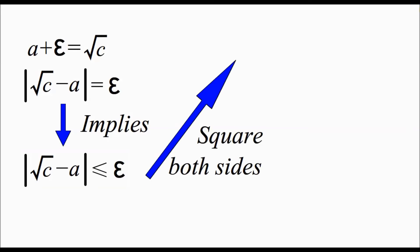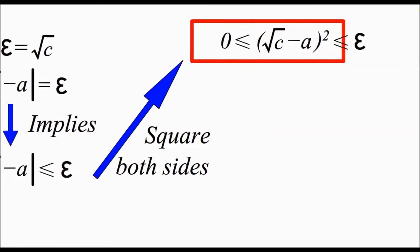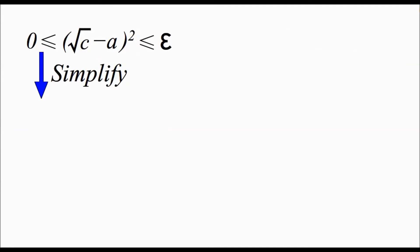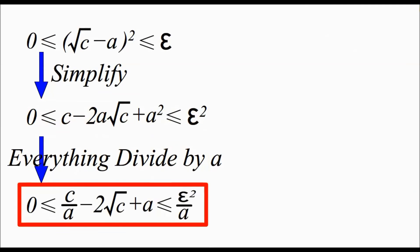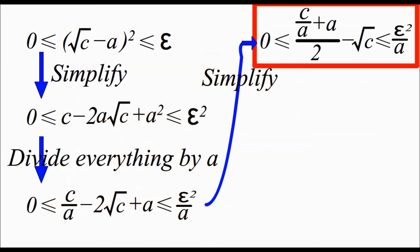If we square both sides of the inequality, we get this inequality instead. If we simplify this, we get this thing right here. Now I'm going to do a trick. If we divide the whole thing by a, then this inequality will appear. Now if I simplify the middle, then you can see this thing right here.